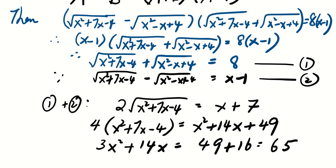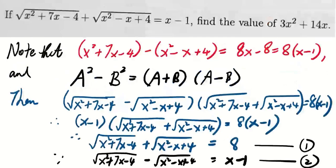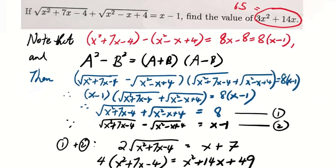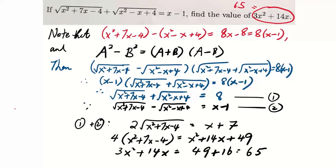Let's look at the question. We actually want to find the value of 3x squared plus 14x, and that is equal to 65. So this means that the answer for this question is 65.